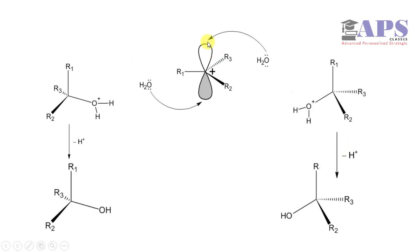From step 1, carbocation intermediate is formed, which is sp2 hybridized having a p orbital. In this case, we have a tertiary carbocation and water as nucleophile. Water can approach from below the plane as well as from above the plane.